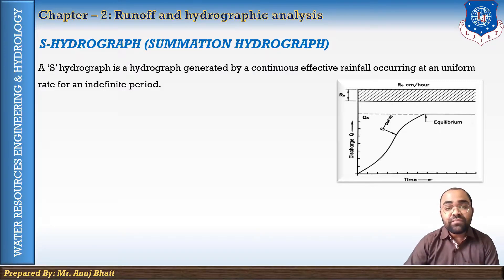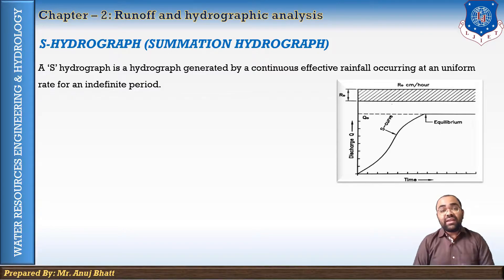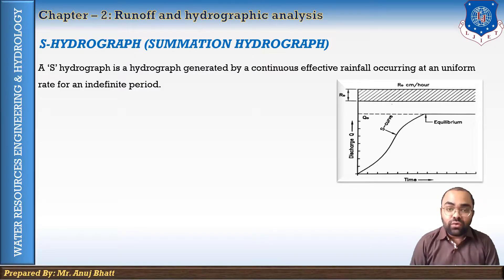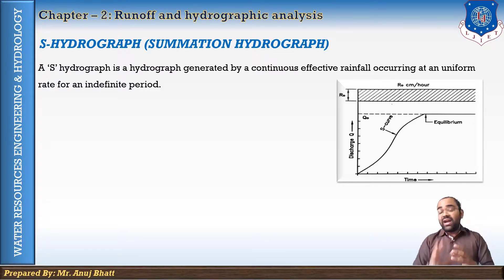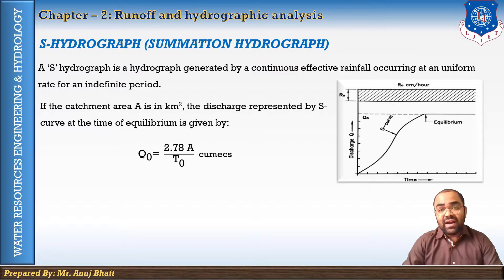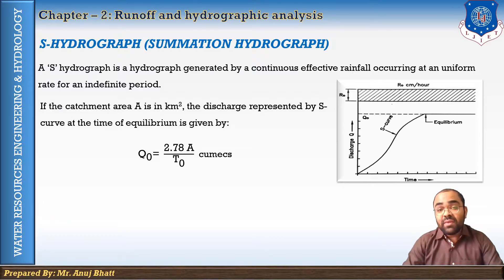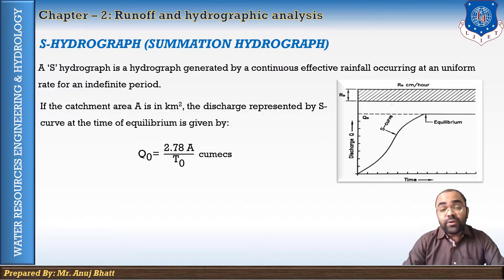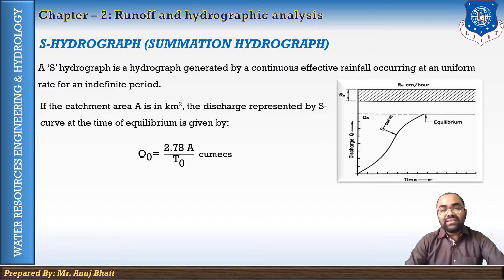After the time of equilibrium, the ordinate of the hydrograph equals the rate of effective rainfall, and the hydrograph curve traces a horizontal line parallel to the x-axis. If A is the catchment area and Q0 is the discharge at the time of equilibrium T0, then Q0 = 2.78 × A / T0. Using this formula you can find the discharge at time T0.